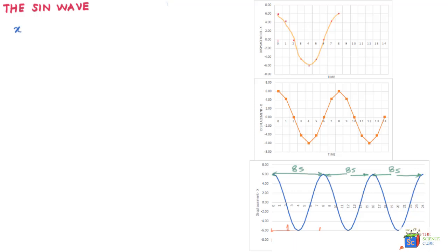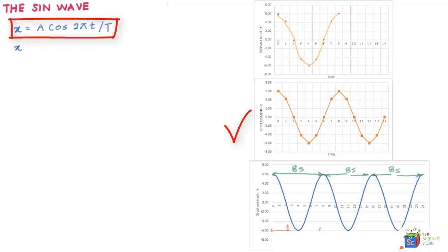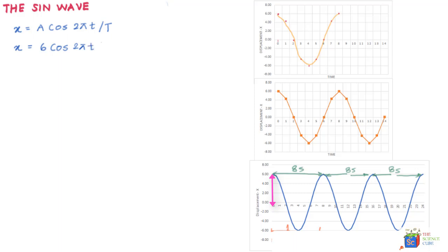The equation X = A cos(2πt / T) accurately defines this graph. This is the general equation: if you have the amplitude A and the time period T, substituting any time value t gives the corresponding displacement X. For this particular case, the equation becomes X = 6 cos(2πt / 8), since the amplitude is 6 meters and the time period is 8 seconds.